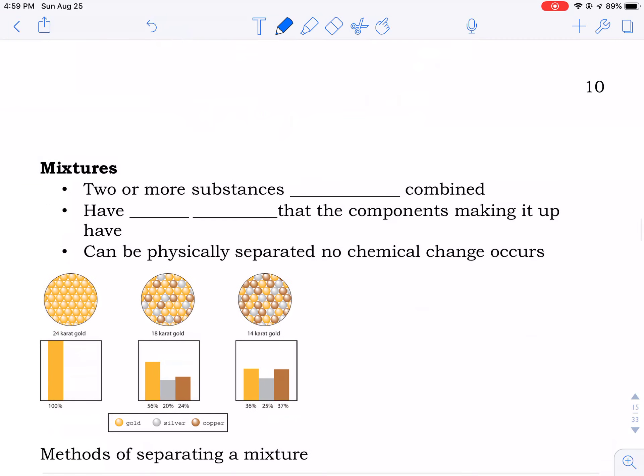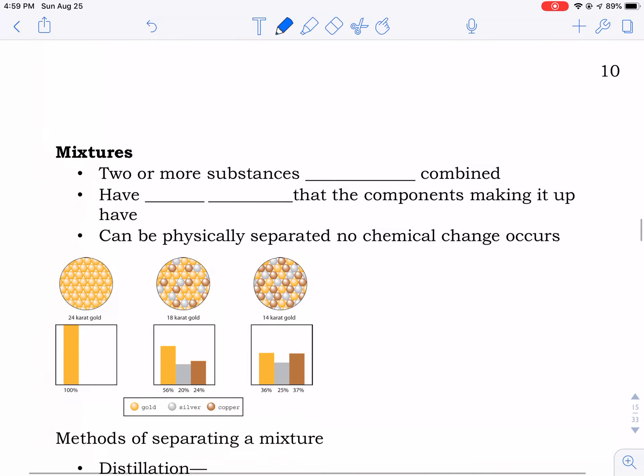Mixtures. Mixtures are two or more substances that have been physically combined. They have the same properties that the components making them up have. Kool-Aid is a perfect example.